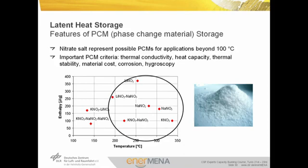Constant temperature energy storage can be implemented using latent heat storage material. Here, the energy associated with the phase change of the storage material is used for energy storage. Candidate materials for the temperature range exceeding 100 degrees are nitrate salts. Important criteria for the selection of phase change materials include thermal conductivity, heat capacity, thermal stability, material costs, corrosion, and miscibility.